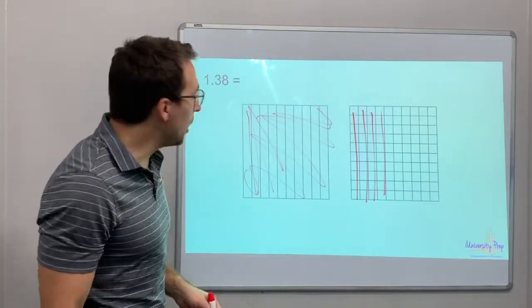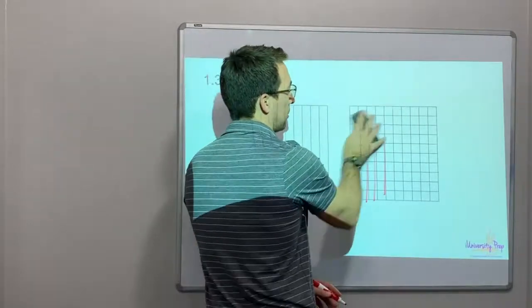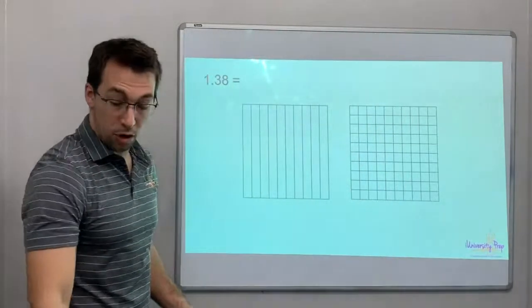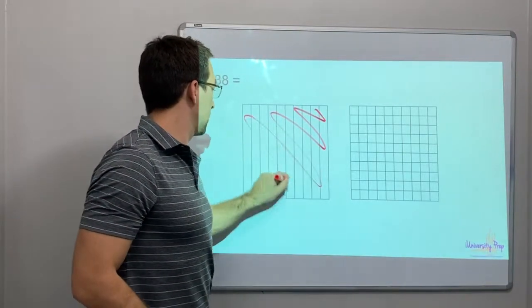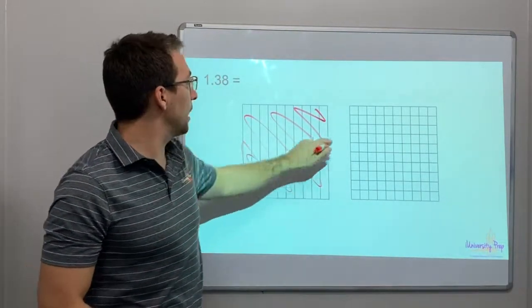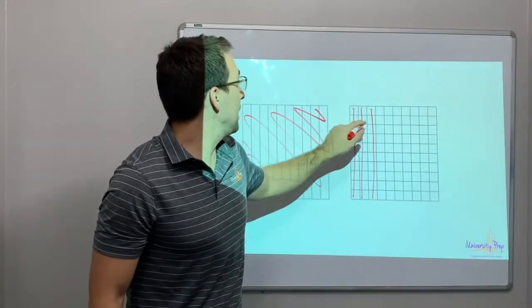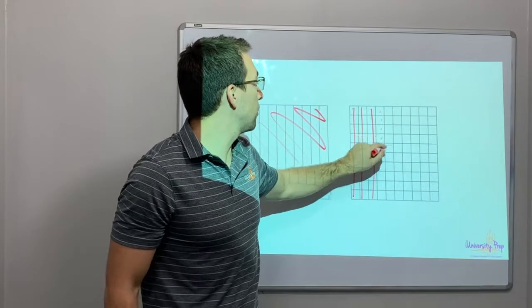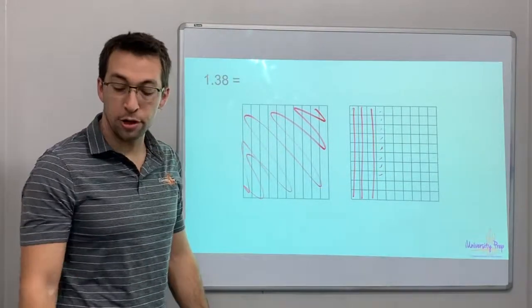It's that simple. So, if you have to fill in your own model. Let's look at this. One point three-eight. So, I'll just, again, one point three-eight. One, two, thirty cents. Now, eight. One, two, three, four, five, six, seven, eight. One hundred and thirty-eight.